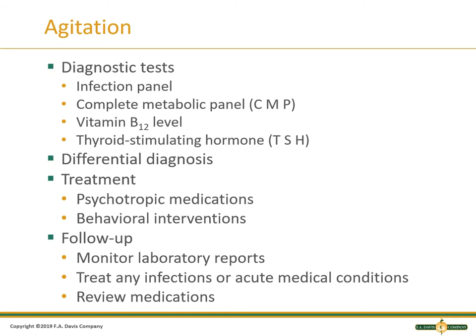For diagnostic tests, we want to rule out those metabolic causes. An infection panel — make sure they don't have a urinary tract infection causing it. Make sure there isn't something else causing them pain that they can't verbalize, like pneumonia or abdominal pain making them restless. Looking at a complete metabolic panel — is there an electrolyte abnormality? Is their sodium low? We know a low sodium decreases the threshold for seizures. Is their potassium elevated? Are they having cardiac arrhythmias? What's their B12 level? Are they anemic? Look at those thyroid studies — with endocrine issues, you lose the ability to thermoregulate.